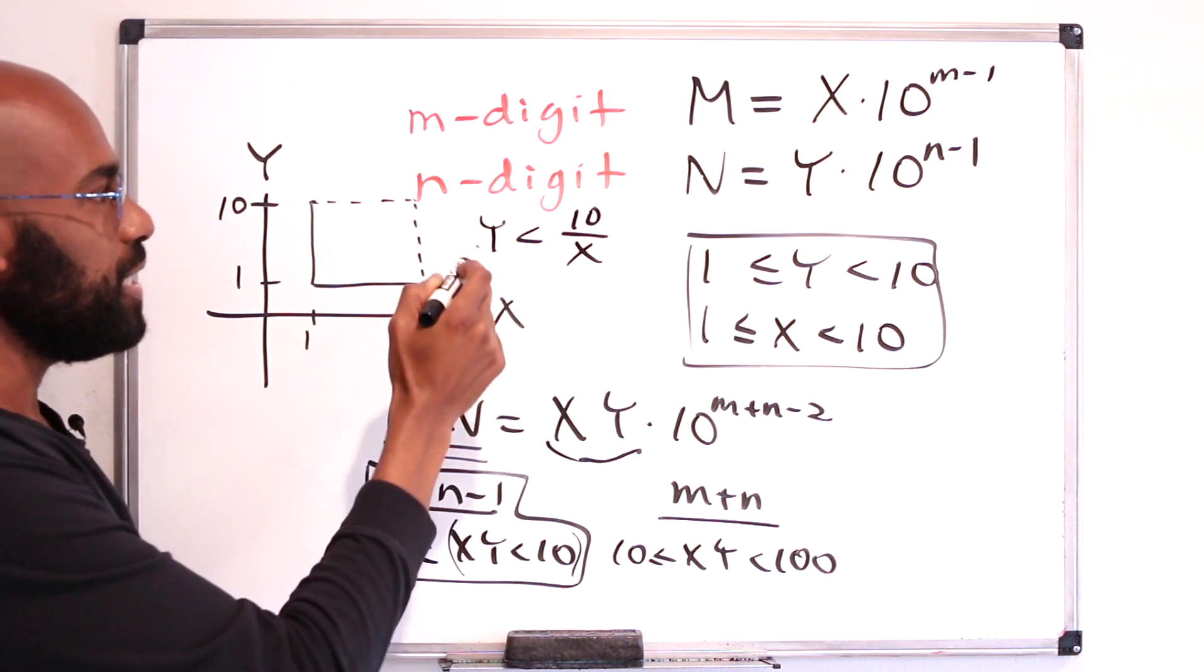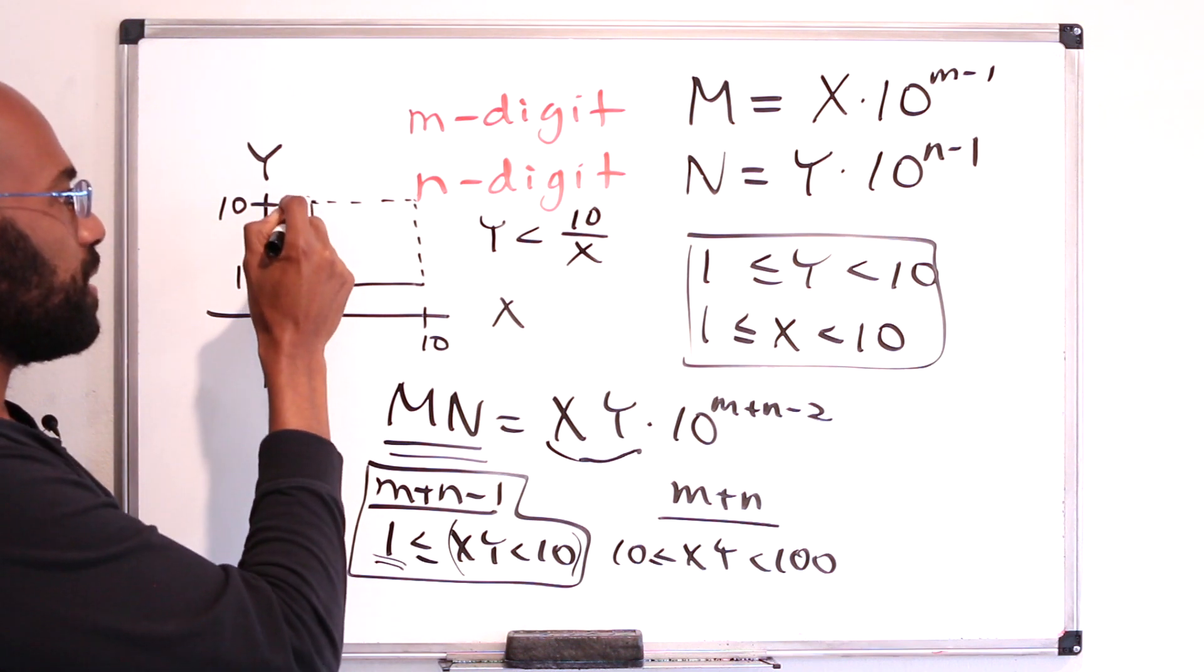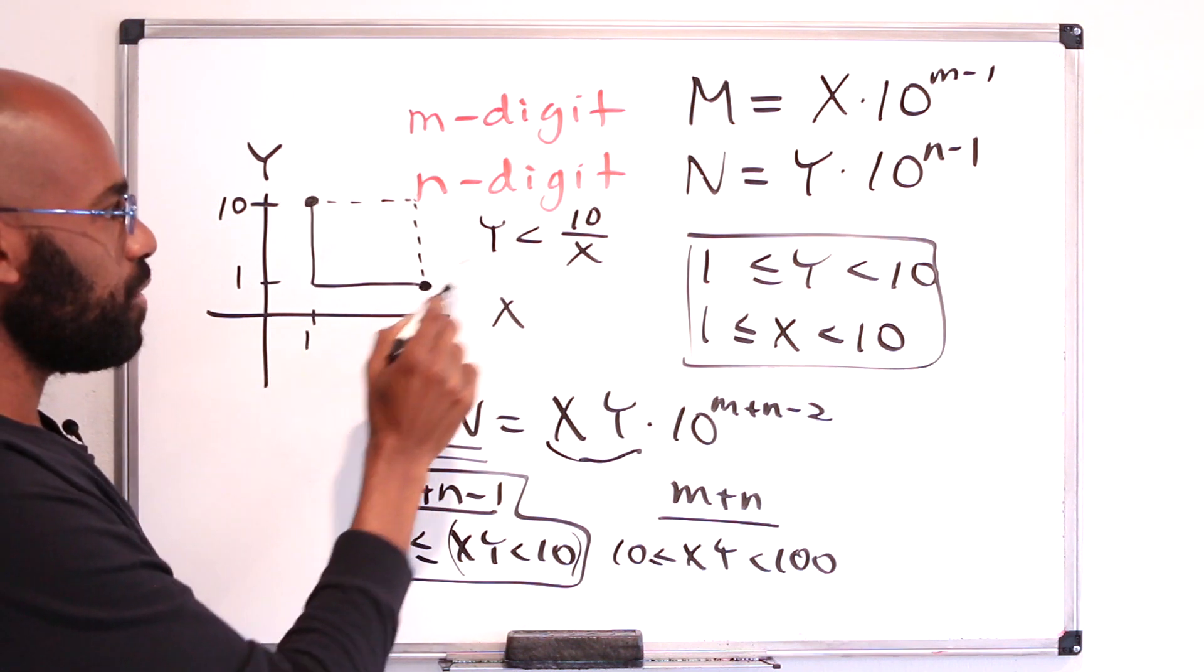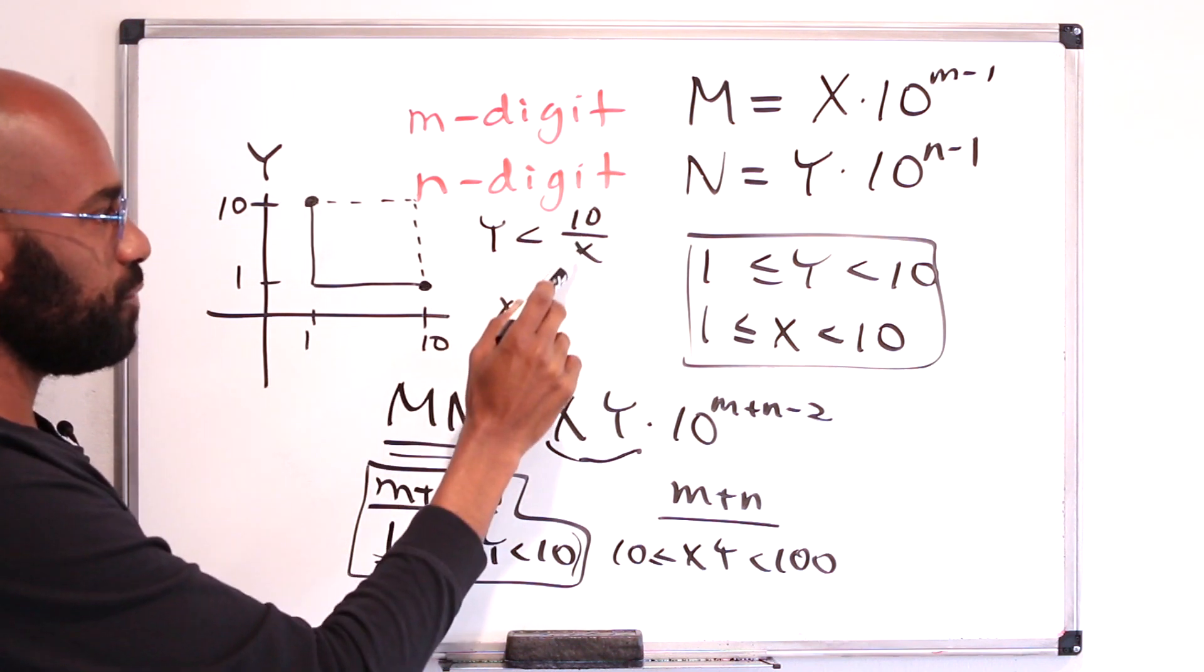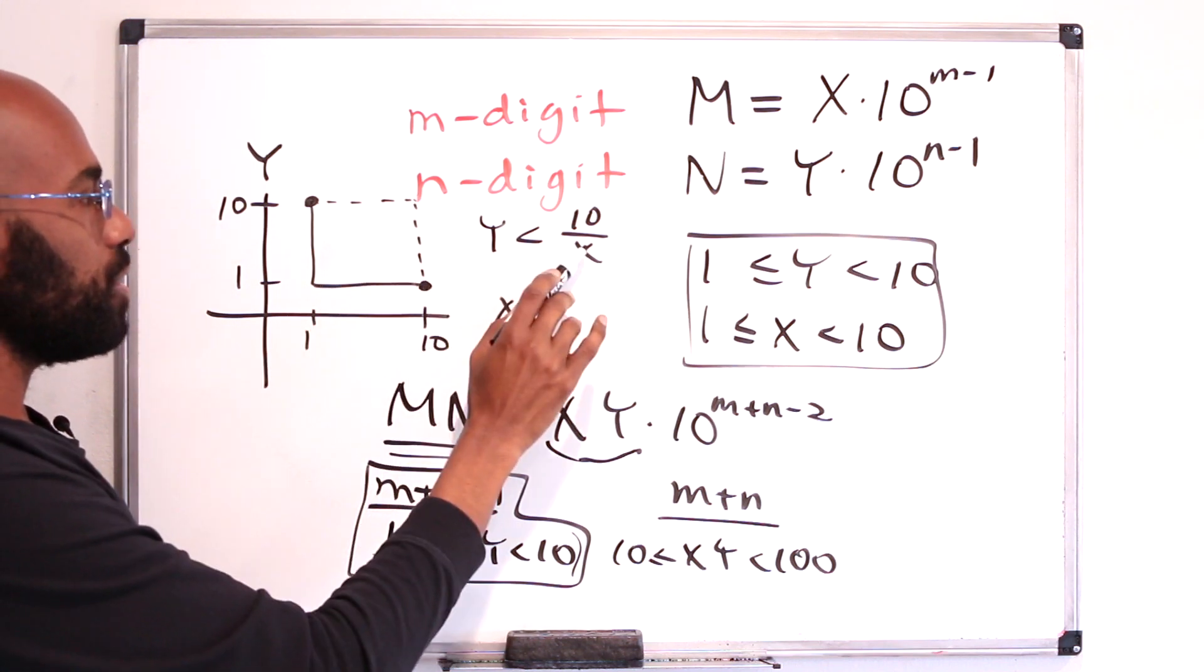Now the graph y equals 10 over x looks something like this. It has the point 10, 1. When we plug in x equals 10, we get 1. And when we plug in 1, we get 10. And the graph will look something like this.